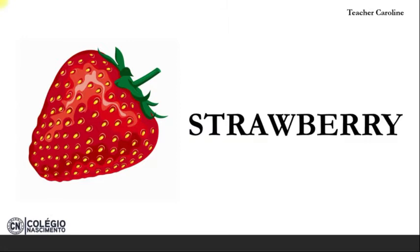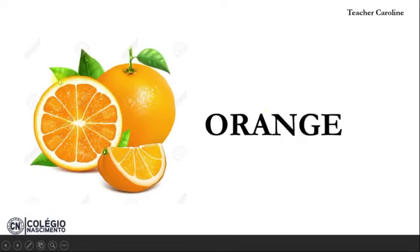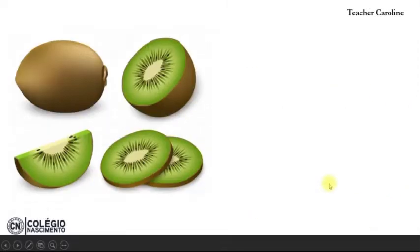E agora nós vamos falar de algumas frutas e algumas comidas que nós comemos, geralmente, no breakfast, no café da manhã. O primeiro que nós vamos falar, já tá aqui na tela, é o strawberry. Strawberry, que é o morango. Temos mais uma frutinha aqui, é a orange. Orange, é a laranja. A próxima frutinha é o kiwi, que a gente fala do mesmo jeitinho que fala em português mesmo. É o kiwi.